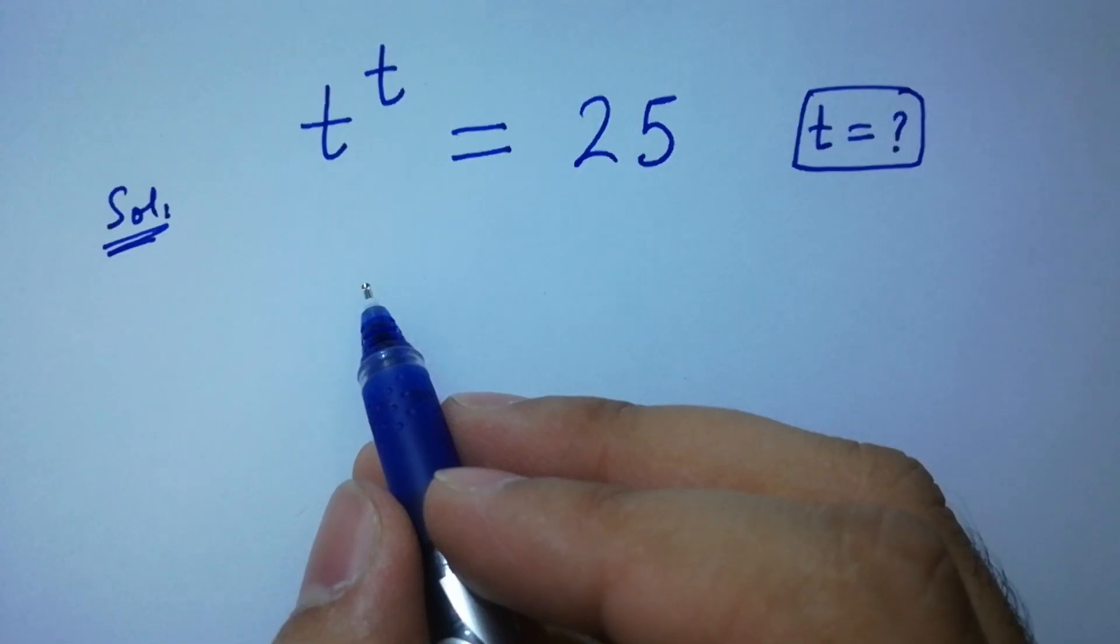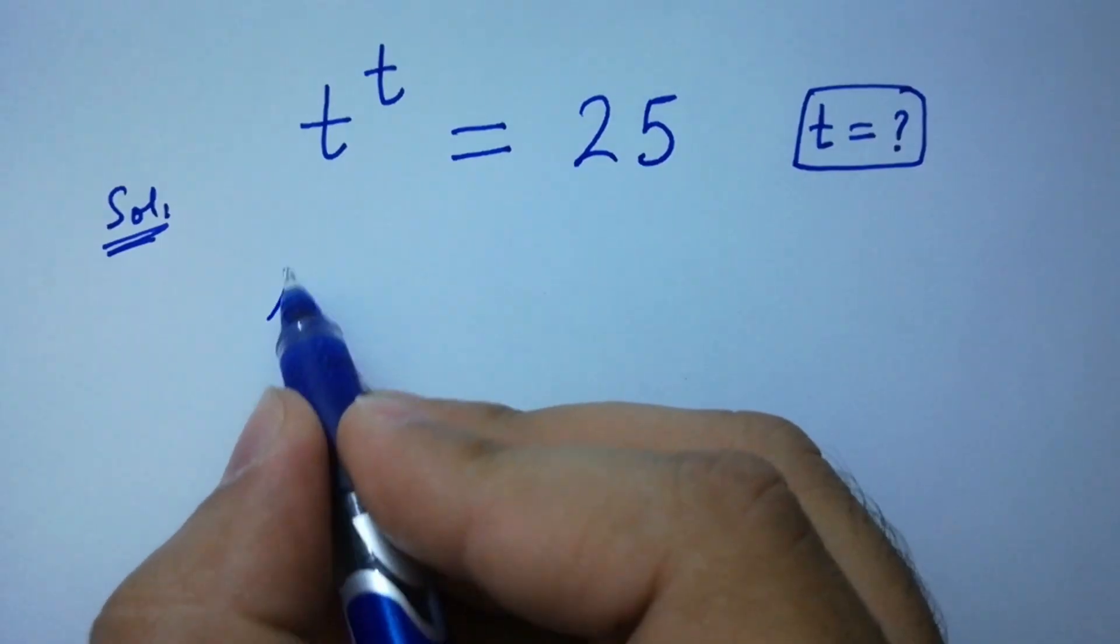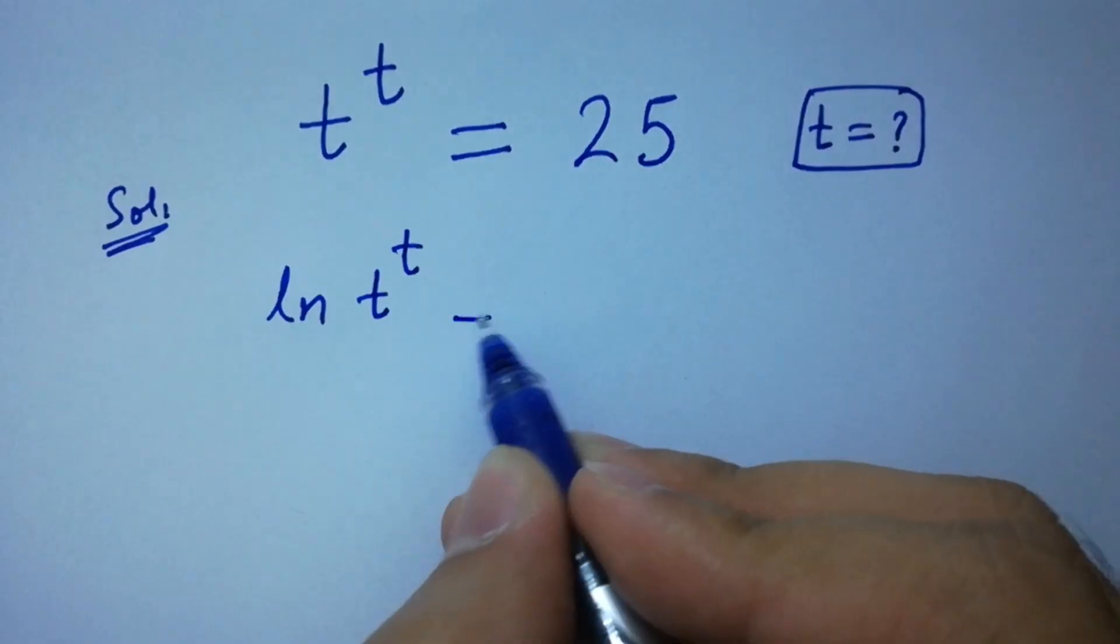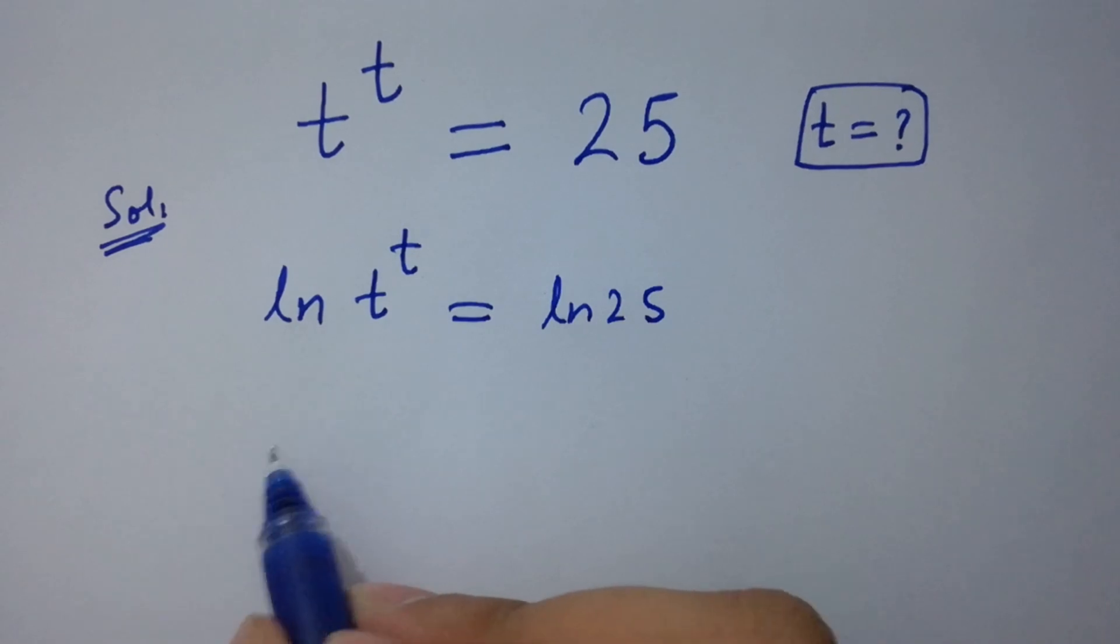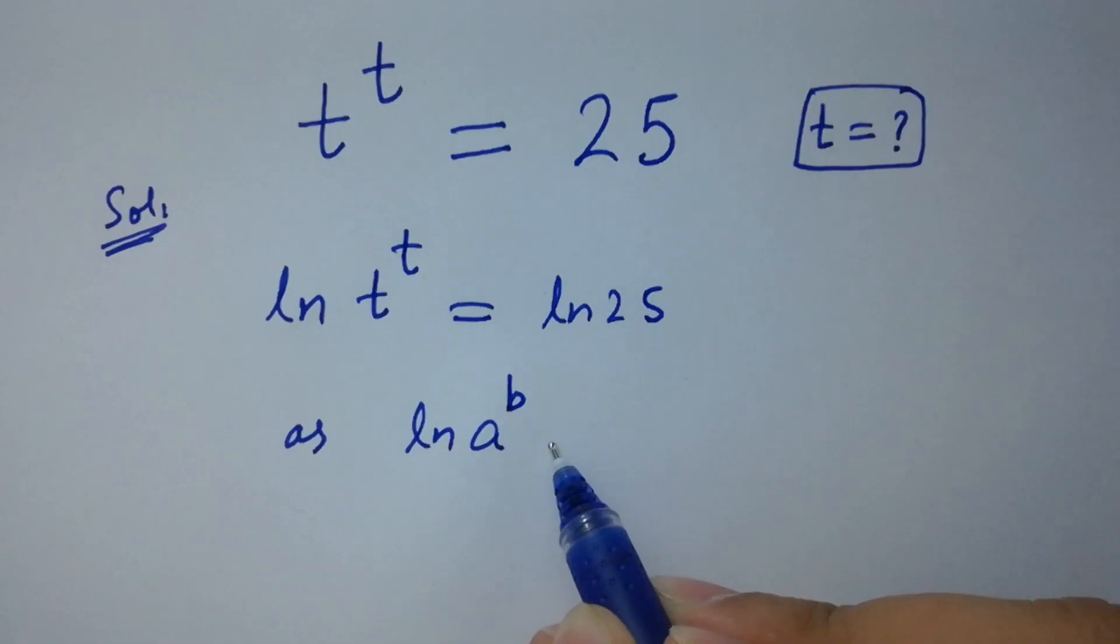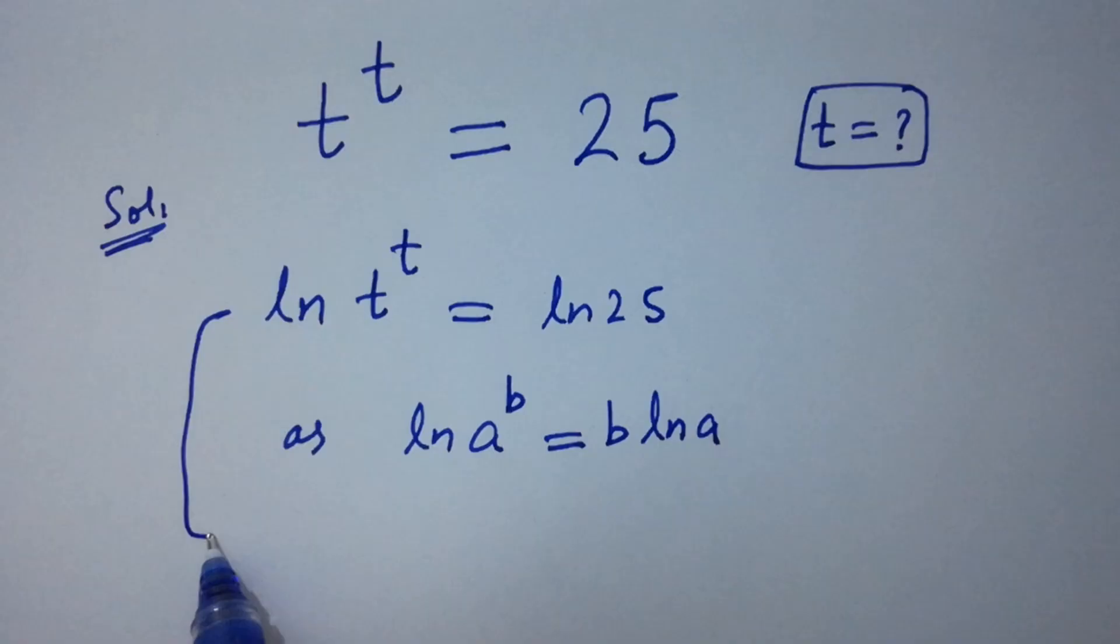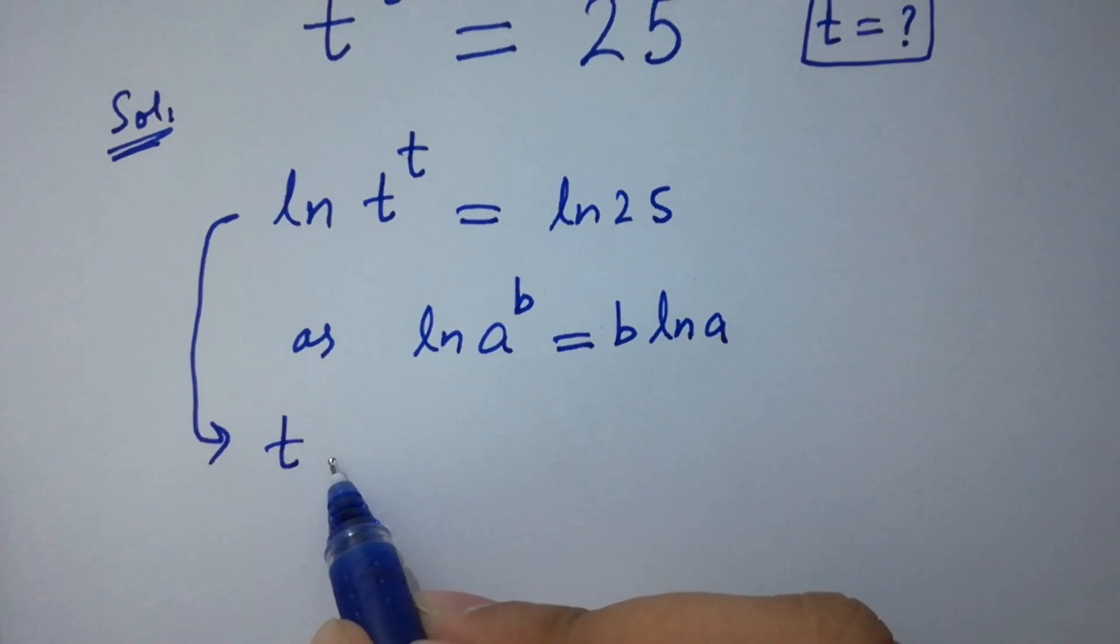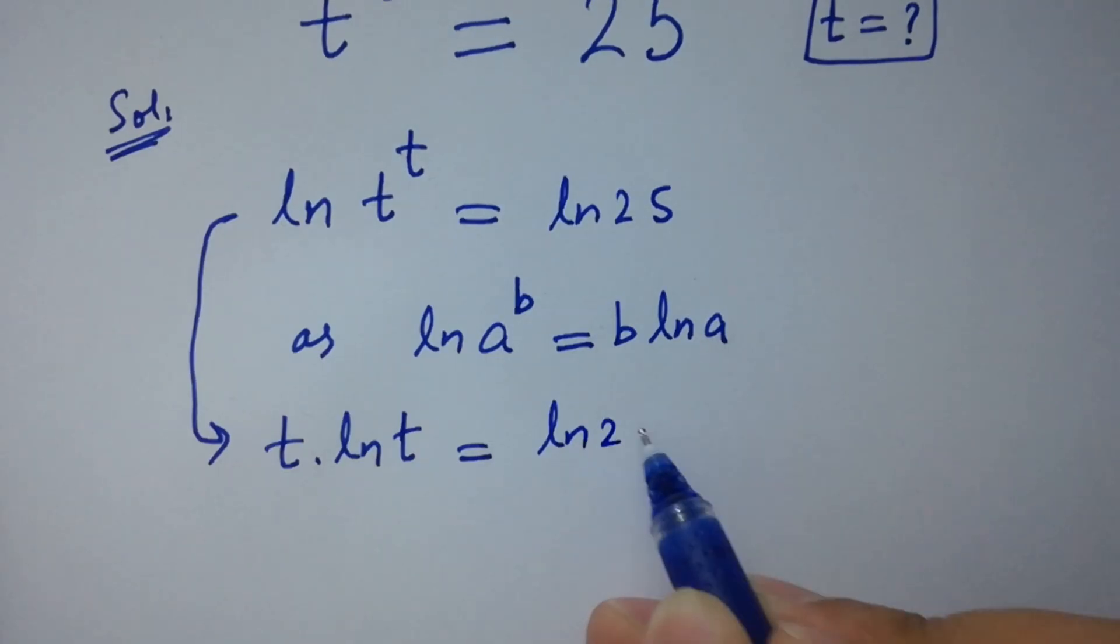To solve this, take natural log ln on both sides. As ln t to the power t equal to ln 25, and as ln a to the power b equal to b ln a, then it will be t ln t equal to ln 25.